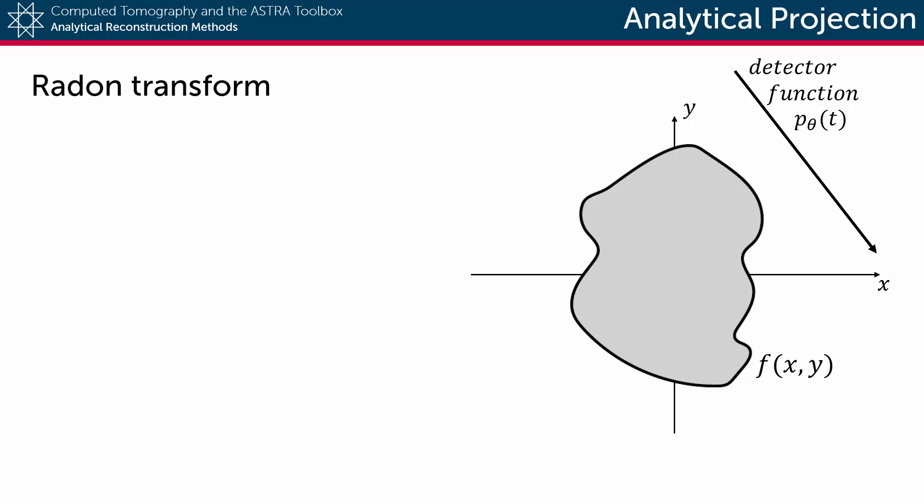Finally, we define an x-ray as a line L through the object function, parameterized by θ, the angle between the ray and the y-axis, and by t, the position where this x-ray intersects with the detector line.